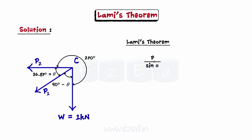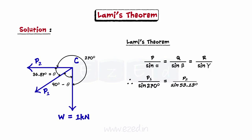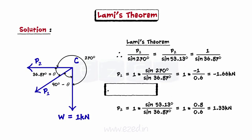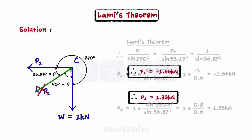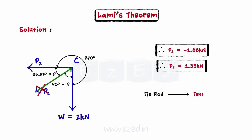Applying Lamy's theorem: P upon sine alpha equals Q upon sine beta, which equals R upon sine gamma. Substituting the values of forces and the angles and then simplifying, we find P1 is equal to minus 1.66 kilo Newtons and P2 is equal to 1.33 kilo Newtons. The negative sign indicates that the direction of force P1 is opposite to that shown in the figure. Obviously, the tie rod will be under tension and the jib will be in compression.